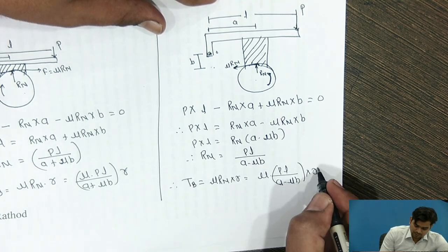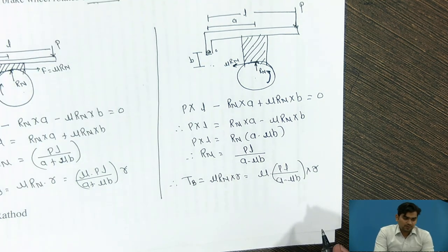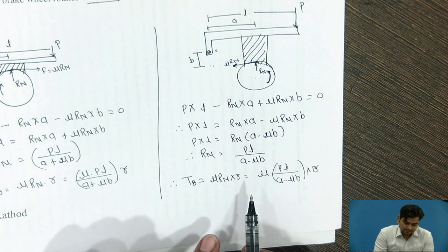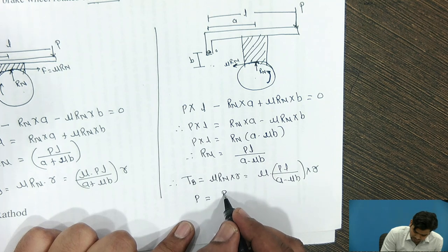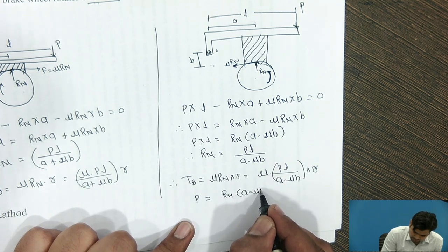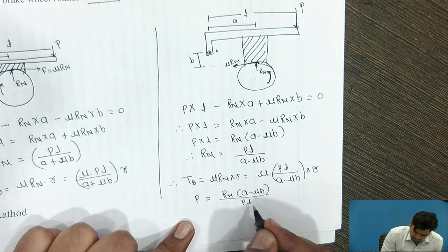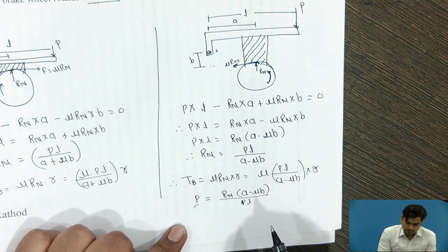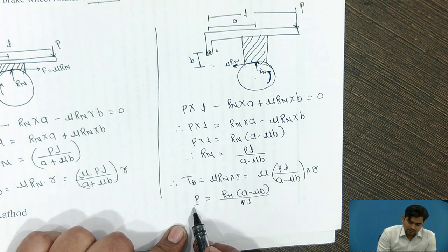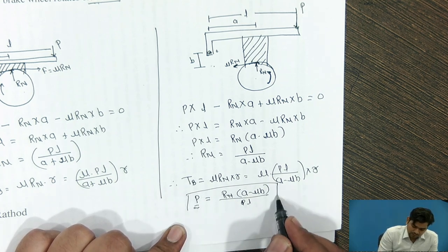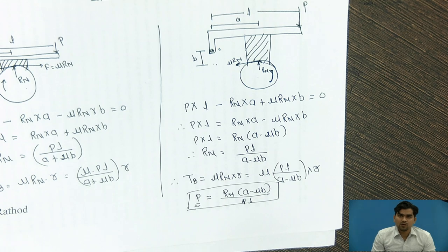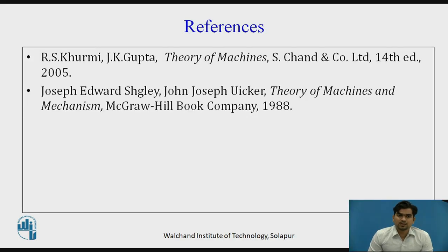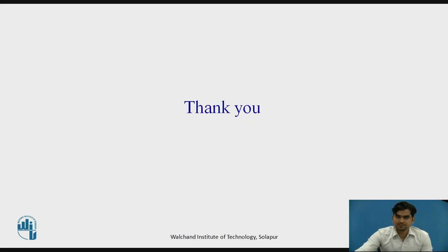This is the braking torque under these circumstances. From this, we observe that the force P equals Rn into (A minus μB) divided by L, which is the amount of force required to stop the rotating wheel. From these equations we will get the concept of self-energizing brake and self-locking brake, which we will see in the next session. These are my references. Thank you.